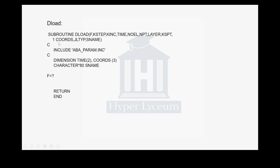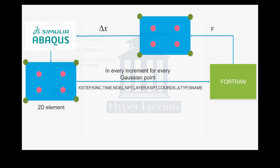For a subroutine code, we have specific variables that we can use. These are the variables that Abacus sends to the subroutine. The variable F, which represents load, is the variable that we need to send back from the Intel compiler to Abacus.